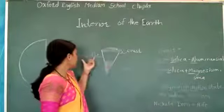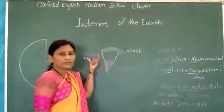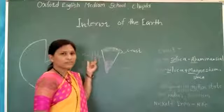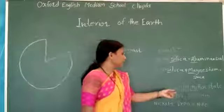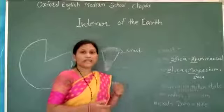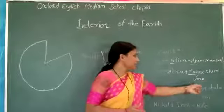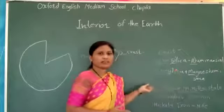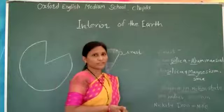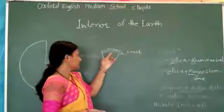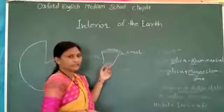The second layer is known as mantle. The width of this mantle layer is about 2,900 kilometers. This layer is magma in a molten state, and that's why this is a hot layer.